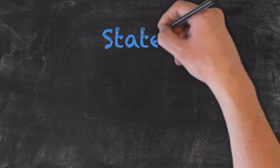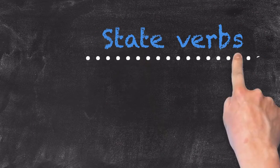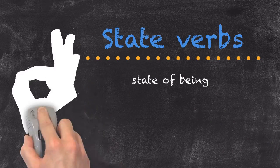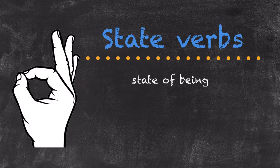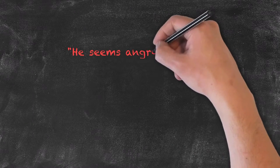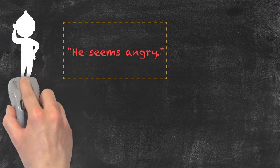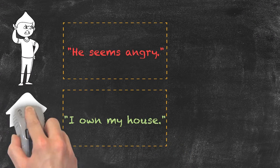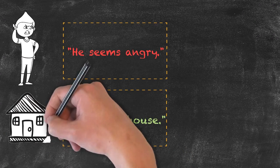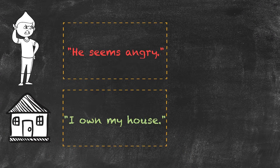Now we have our state verbs. These are basically indicating a state of being. Two examples would be seem and have or own. We have a sentence such as he seems angry and I own my house. You can't actually see the action happening even though those words are used as verbs.